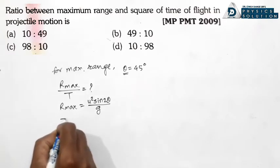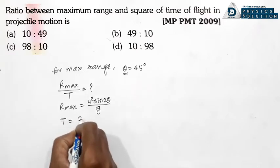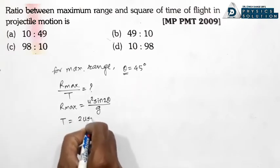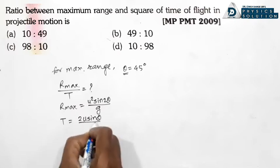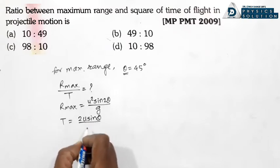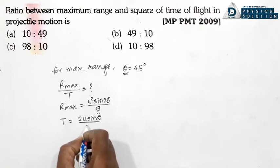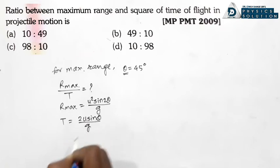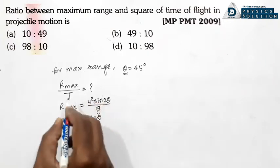Time of flight ke liye formula hai 2u sinθ divided by g. Ab ratio kya dena hai yahan par — r_max upon t².